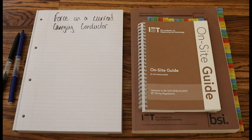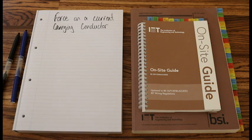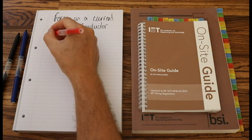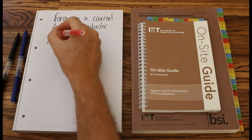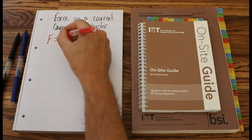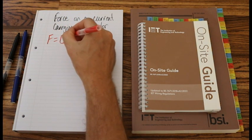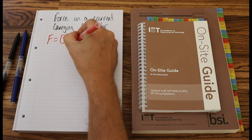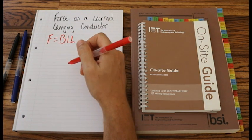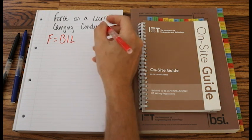Let's grab our red pen, because we always write down our formulas in red. Let's start with the first of our formula. So there's four for this one. This is F equals BIL. F equals Bill. Easy enough to remember.